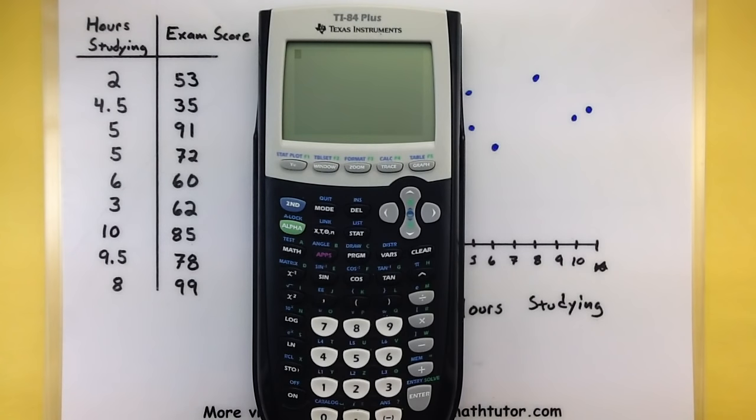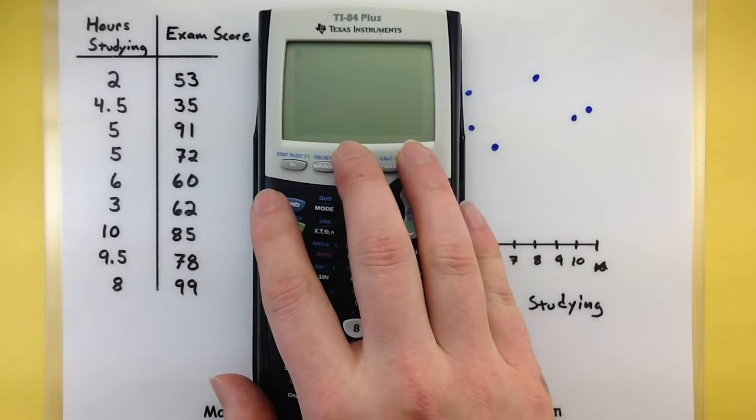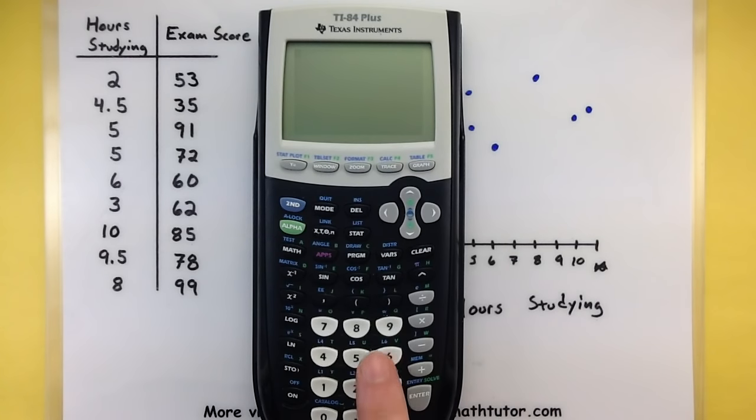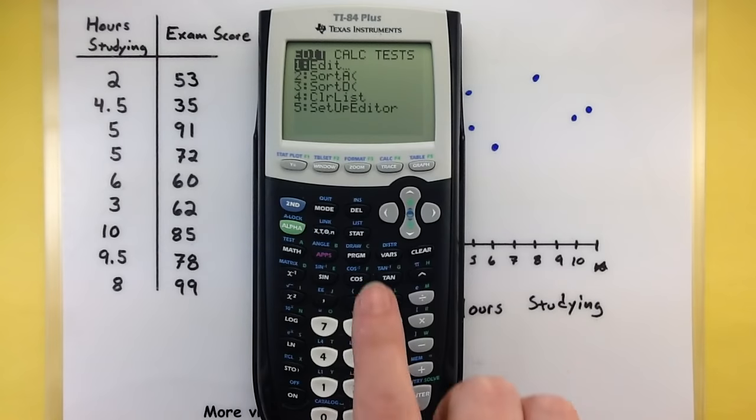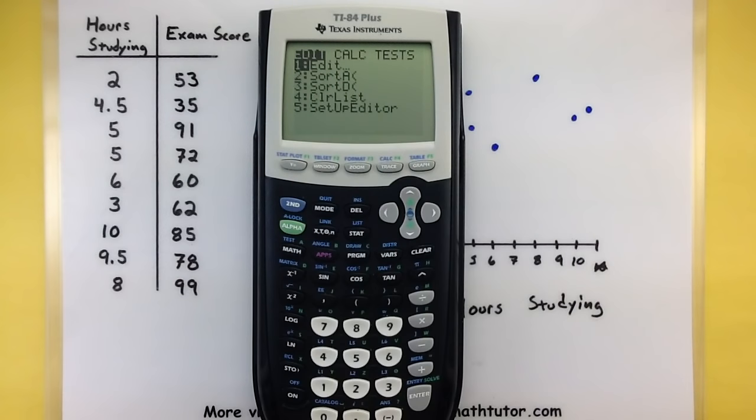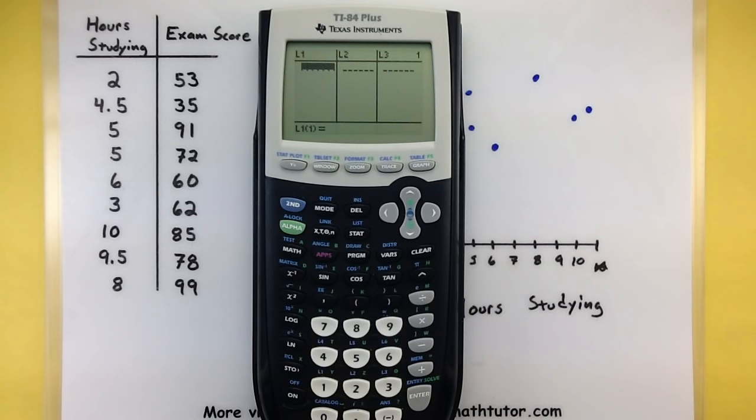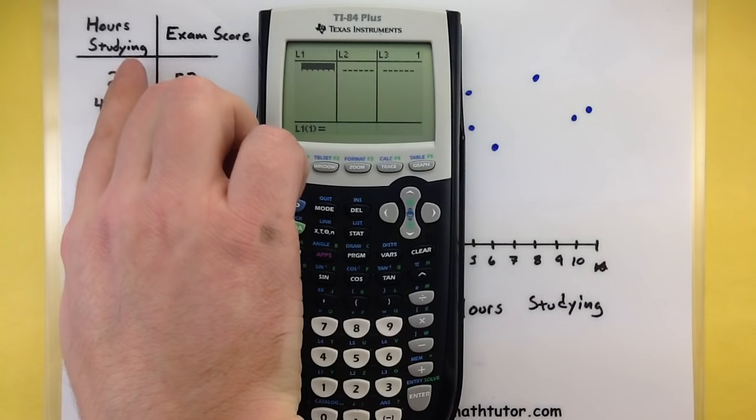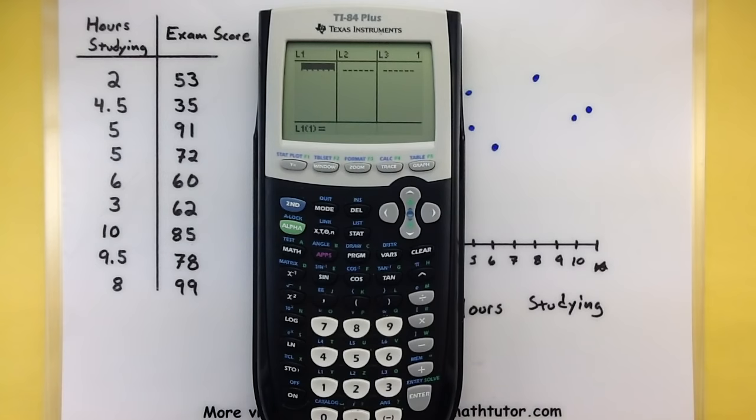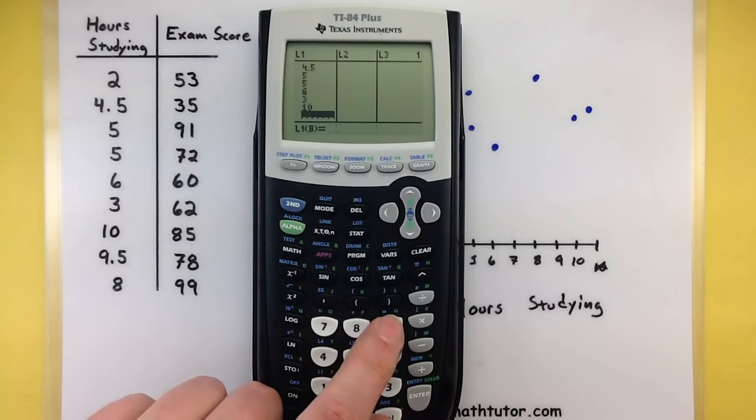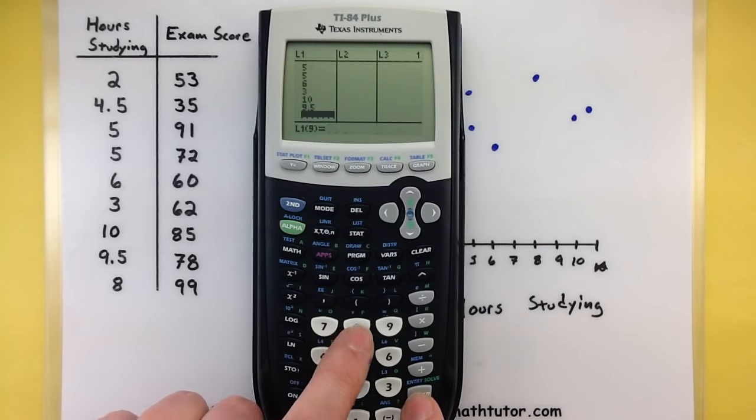The very first thing we need to do is take all of our data here and put it into the calculator. To do that, you want to find your stat button, press that, and then notice how it's under edit. Go ahead and press enter to start putting in your data. We'll put all of our hours studying under list 1 and our exam scores under list 2. 2, enter, 4.5, enter, 5, 5, 6, 3, 10, 9.5, 8.